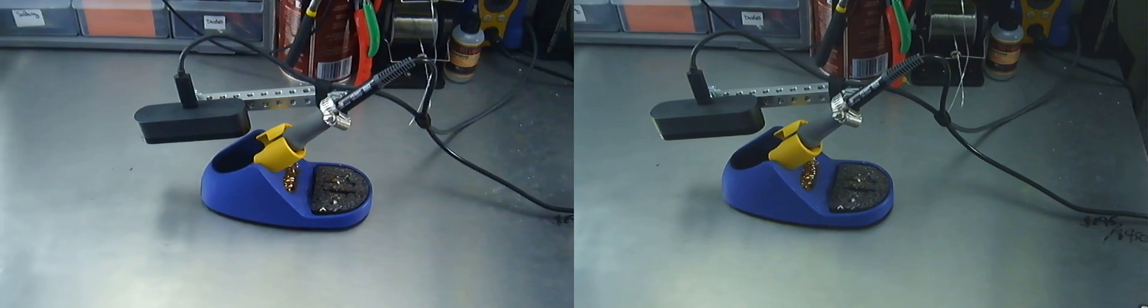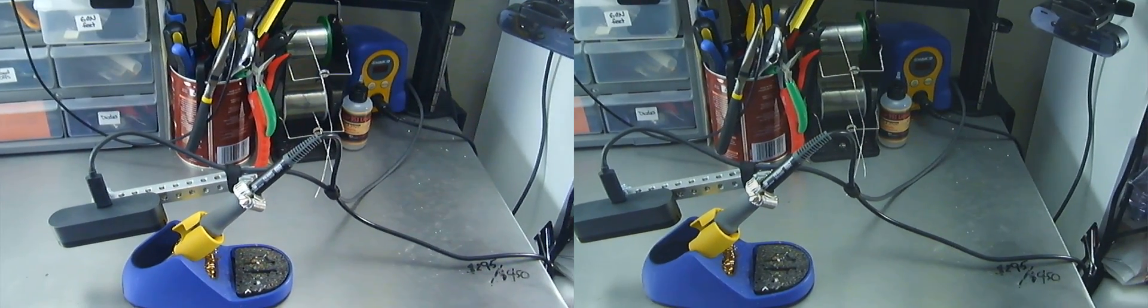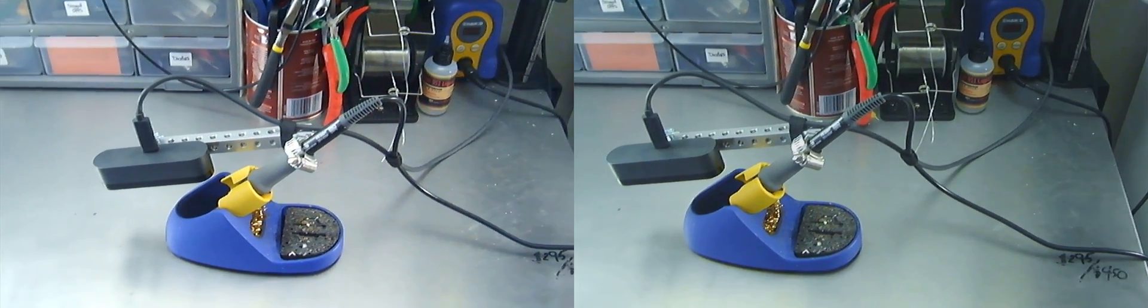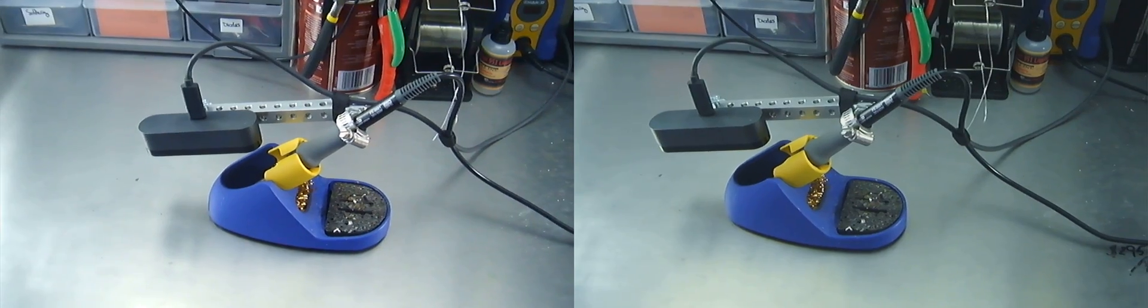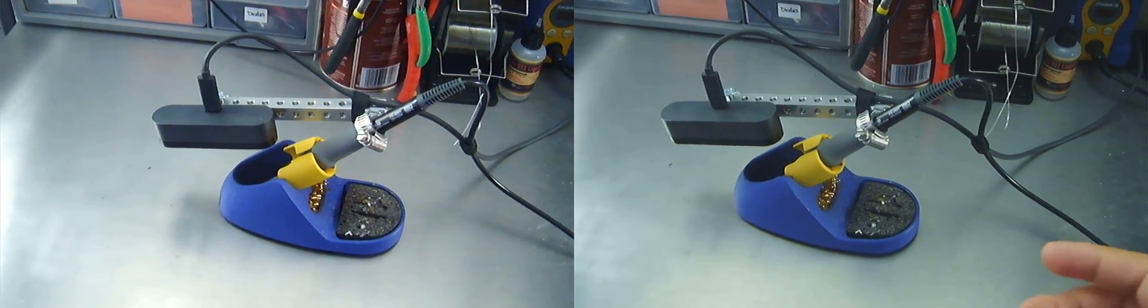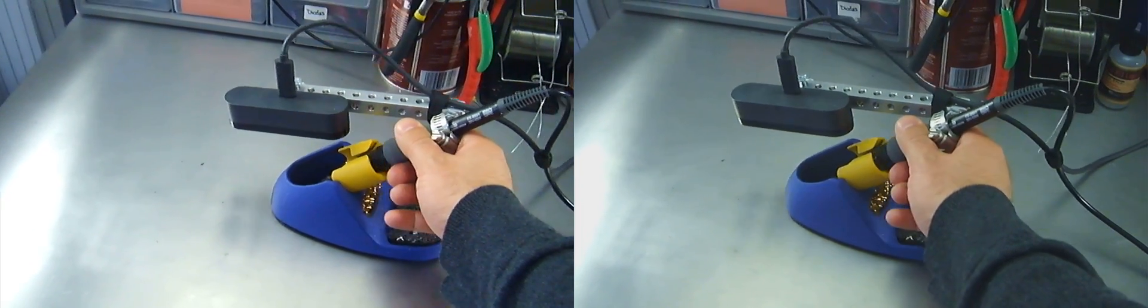The first thing to say is this is the Hakko FX888D. You can see that a little further down on my desk there. There's the power unit over there and a couple of spools with my solder on it. But here we have the contraption that is the soldering iron.